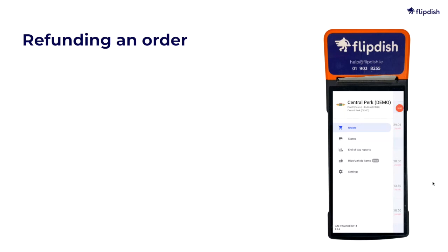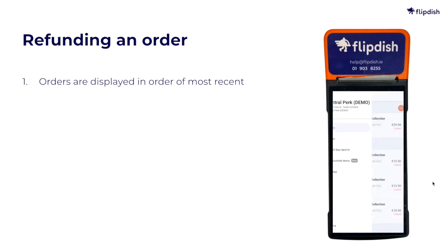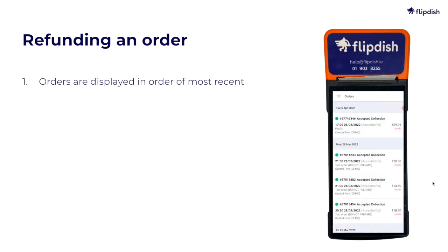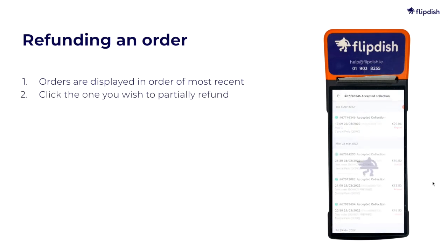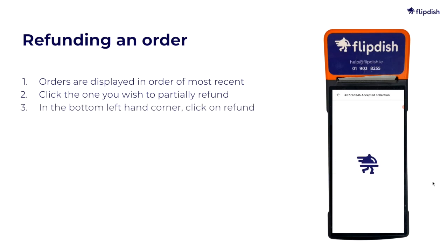Now let's look at partially refunding an order. When on the orders screen of your Flippedish terminal, the orders are displayed in order of most recent. Click into the one you wish to partially refund.